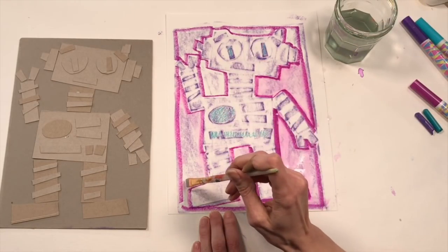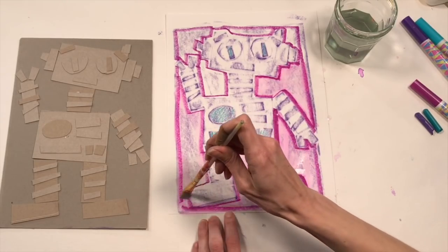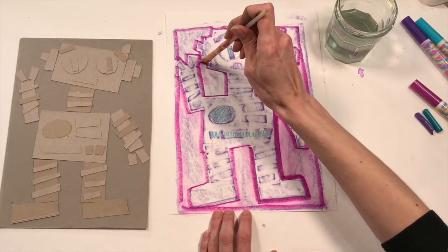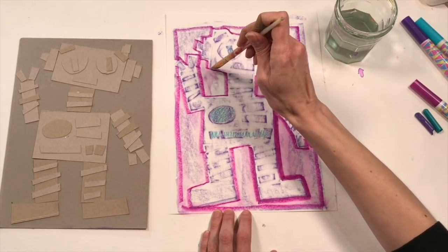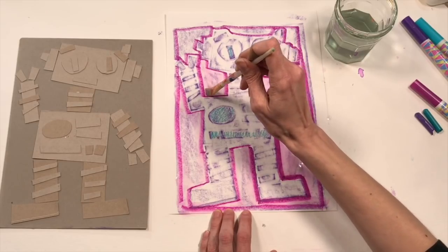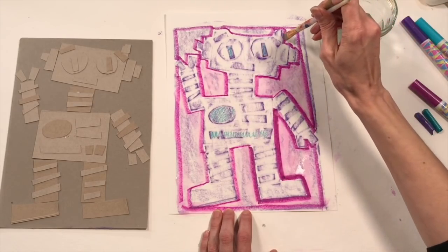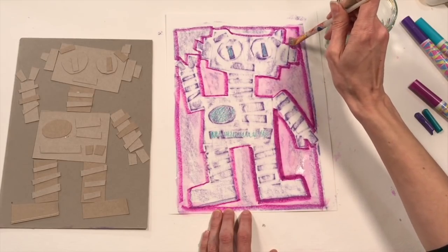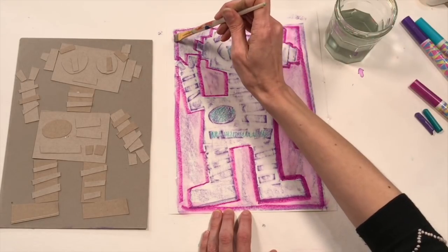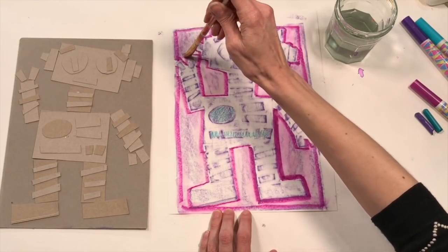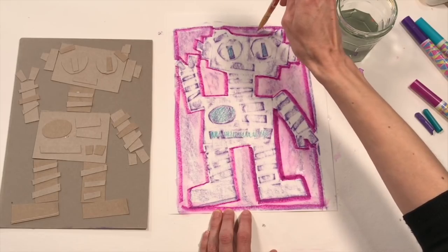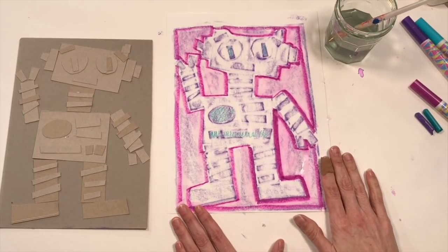All right, guys, I hope you had a lot of fun creating your robot today. And remember, before you do a rubbing, let that glue have its minute of glue grab time. Otherwise, as you do your rubbing, your little pieces might move around and shift on you a little bit, which can be frustrating. So give it a moment to dry and just know that tomorrow you're going to need this cardboard again for our next robot project. All right, guys, I'll see you real soon.